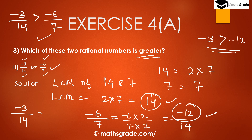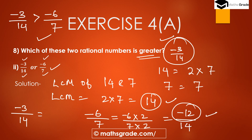So the greater rational number is minus 3 divided by 14. As a general rule: when comparing two rational numbers, first convert them to equivalent rational numbers with the same denominator by finding the LCM of the denominators, then multiply both numerator and denominator by the same number, and finally compare the numerators of the equivalent rational numbers.